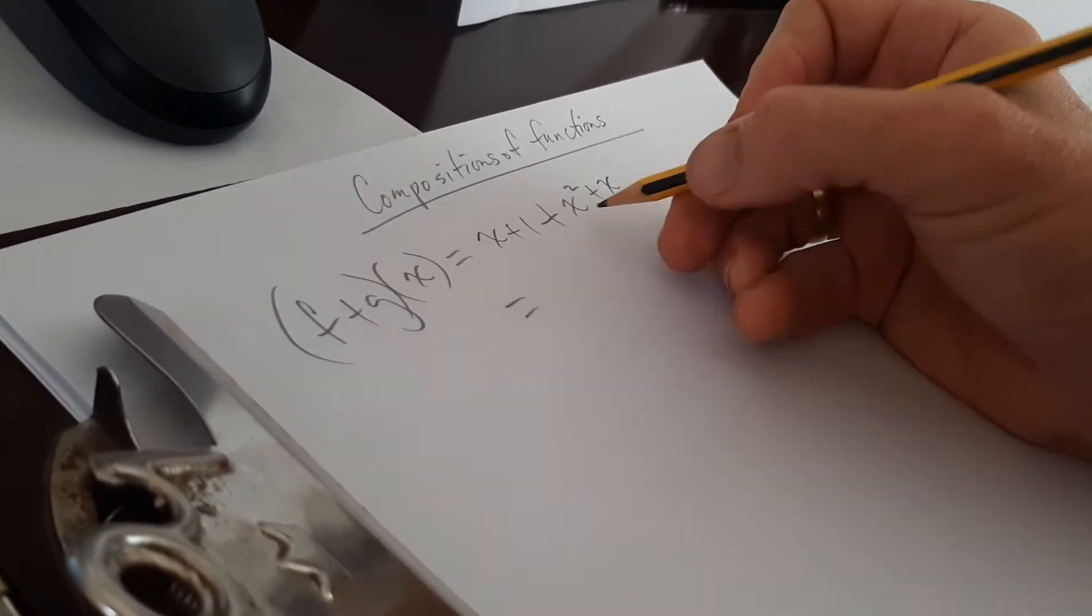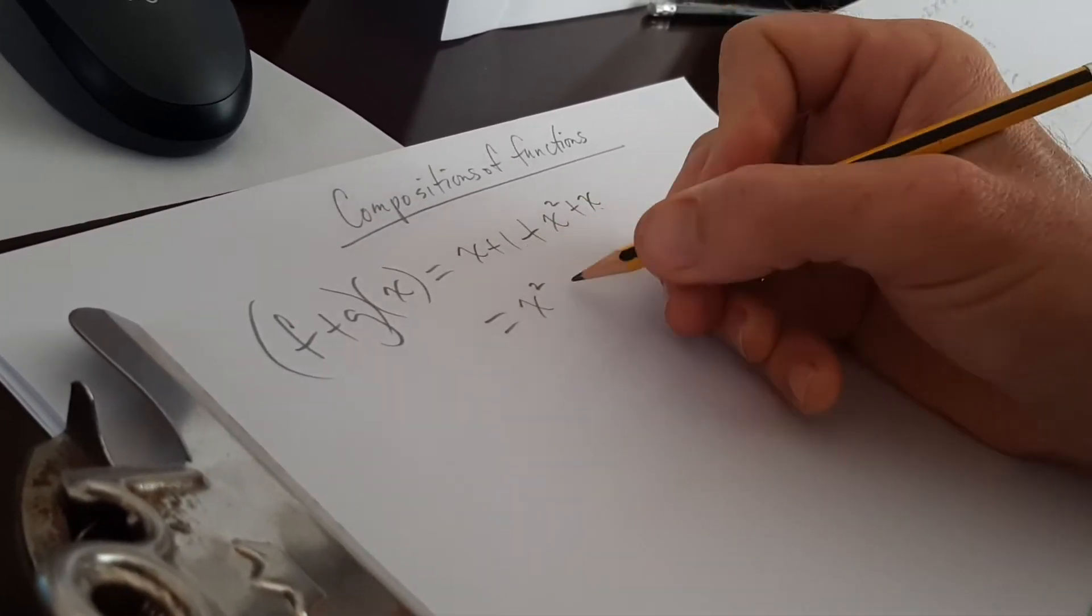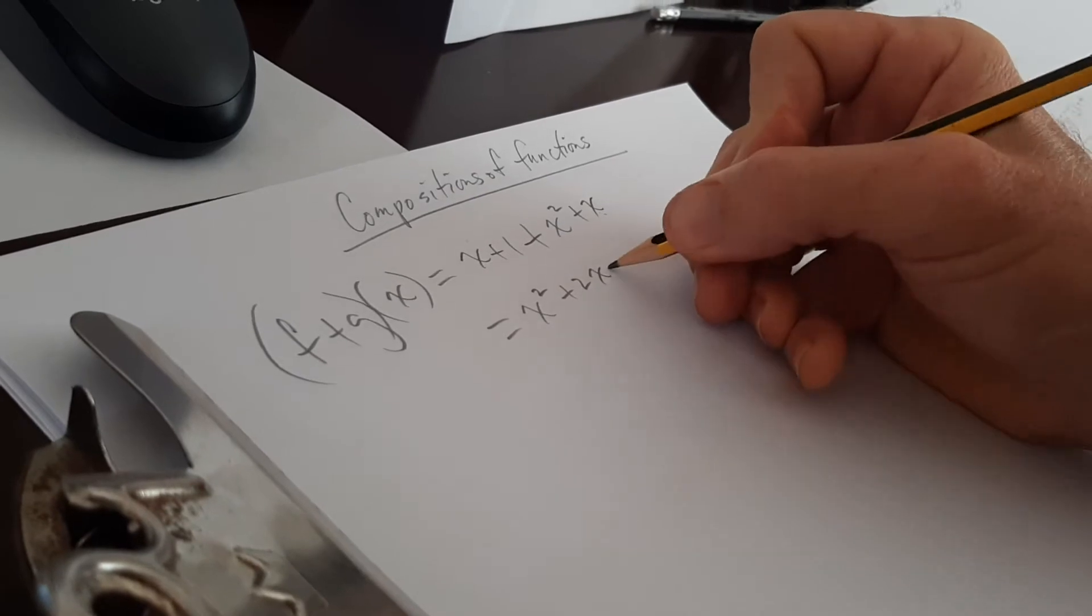I add f of x as x plus 1 plus g of x is x squared plus x. So that's all you do is add the two together. Now I'm going to combine my like terms. So I have x squared plus 2x plus 1.